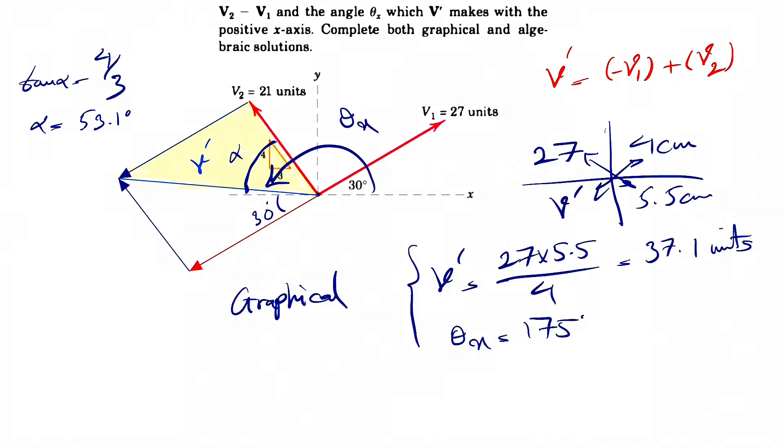So this angle here is 53. So if you want to find this angle here, it's basically 180 minus 30 minus 53.1 degrees. And that angle is equal to what we have in here.